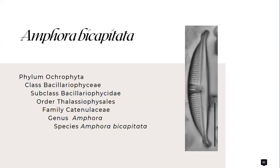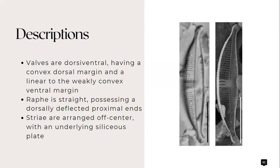As for Amphora bicapitata from the family Catenulaceae, it has valves that are dorsiventral, having a convex dorsal margin and a linear to weakly convex ventral margin.